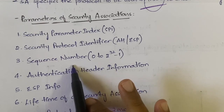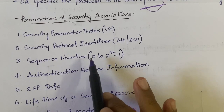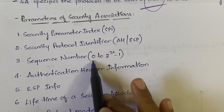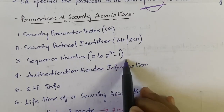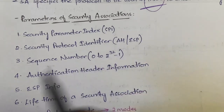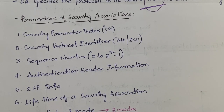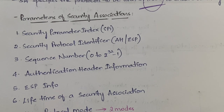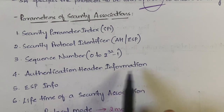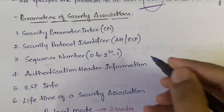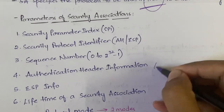Next is the Sequence Number. The sequence number can be anywhere between 0 to 2 to the power of 32 minus 1. This I have also explained in the previous video where I explained about IP security.